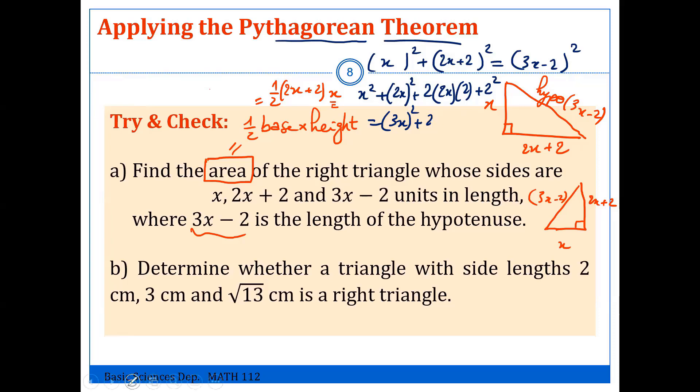and I do the same for the other term, first squared. Here we have minus, in the middle, so minus 2 times 3x times 2 plus 2 squared. Okay,